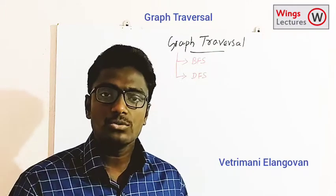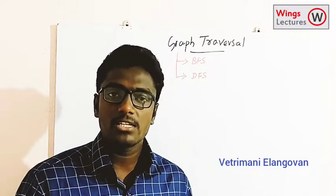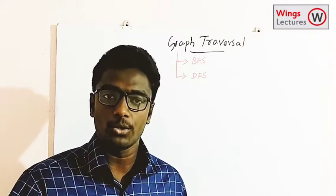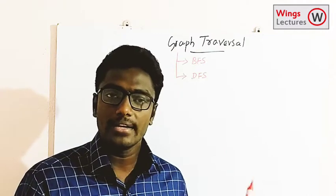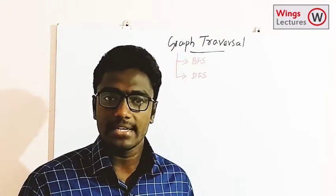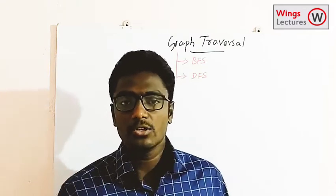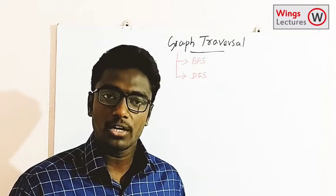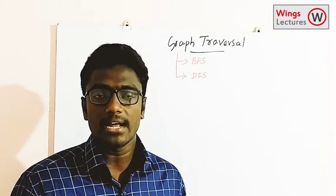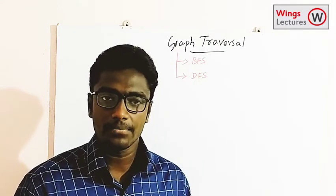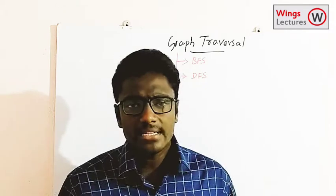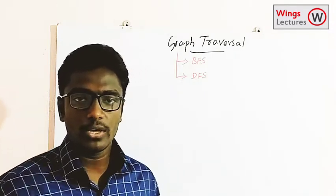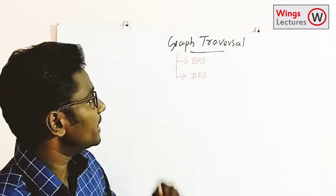We can use this traversal method for searching an element or searching a node. In a graph we call nodes as vertices. So we can search elements from the graph using graph traversal methods. In graph traversal we have two different categories.